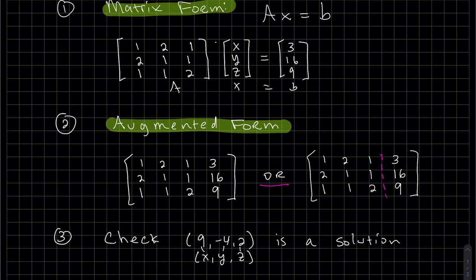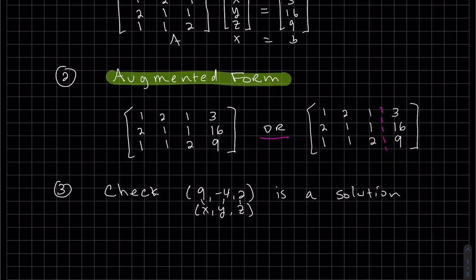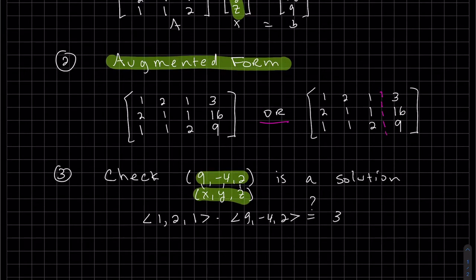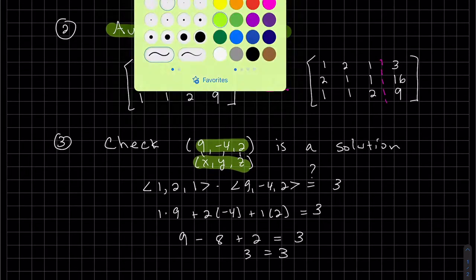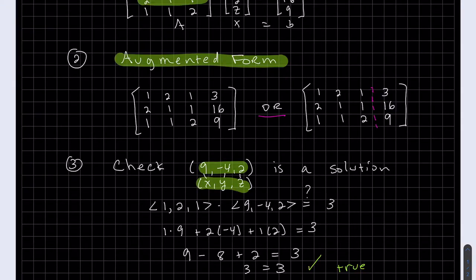To check it, we can go up here and plug it in for X, Y, Z for each of them. Or we can be more advanced and do this dot this equals 3. If this X, Y, Z is the solution, it should equal 3 and satisfy the first equation. Our second equation is this dot our vector equals 16. And our last is this dot this equals 9.